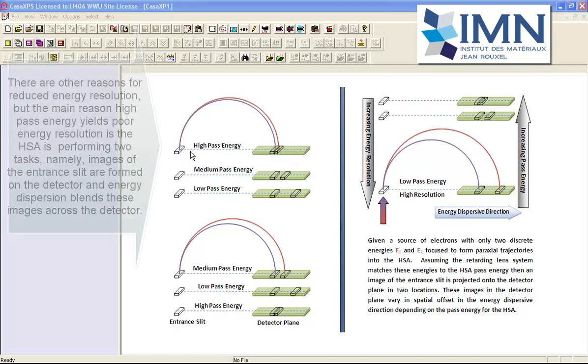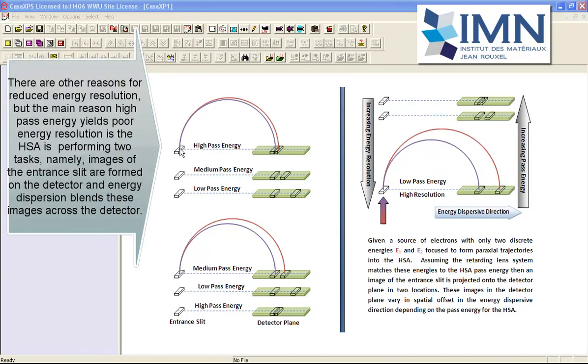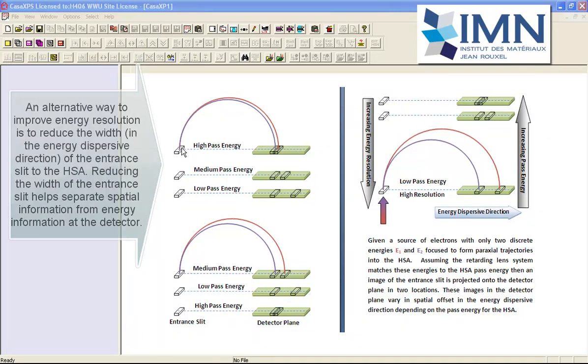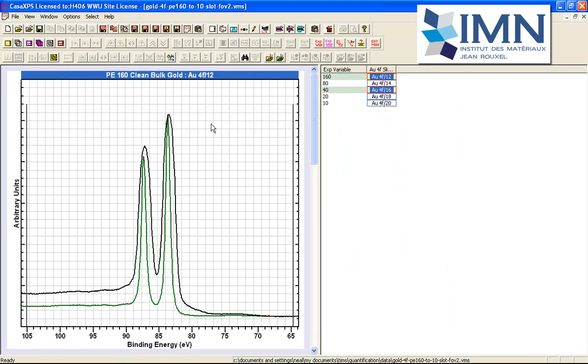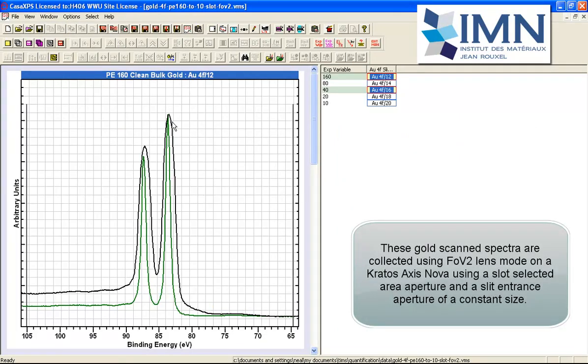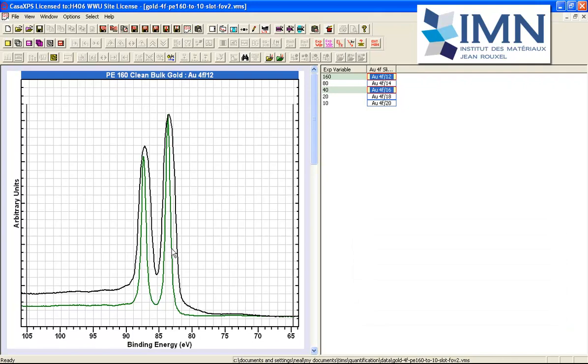The reason that we have broad peaks for high pass energy is that the hemispherical analyzer is performing two functions: it's creating images of this entrance slit and it's also separating the energy in terms of position on the detector for these images. It's this blending of spatial and energy information that is causing the broadening of these peaks. If we look at the gold 4F, you can see that this is the 4F at pass energy 160 compared to pass energy 40. The pass energy 40 spectrum is narrower because there is less confusion between spatial and energy information.